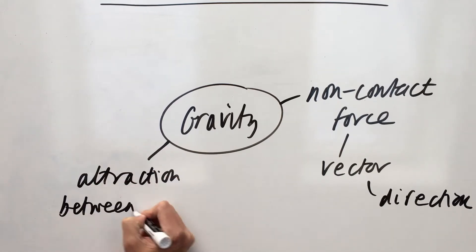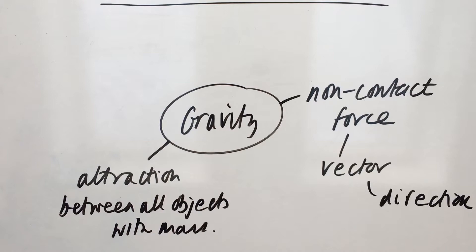So right now, the camera is attracted to me, the camera is attracted to the Earth, the camera is attracted to the Moon, the Moon is attracted to the camera, everything on this desk is attracted to every other object, because these have both got mass.